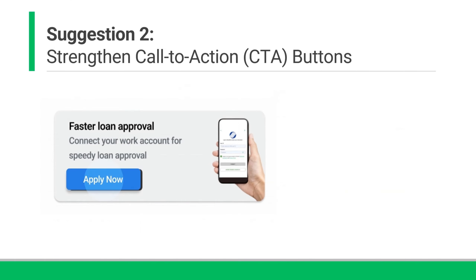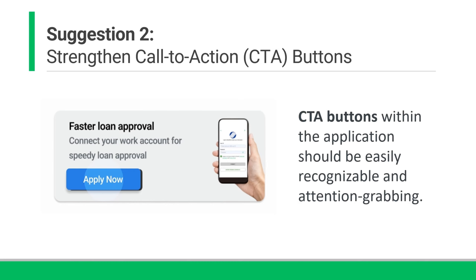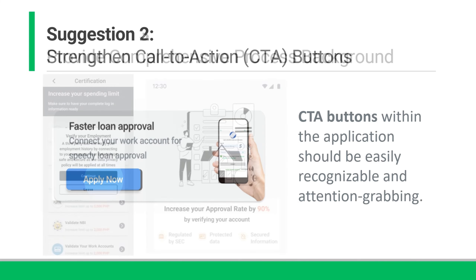Following this, CTA buttons within the application should be easily recognizable and attention-grabbing. By using contrasting colors to make them stand out and employing clear, action-oriented text, users are encouraged to take specific actions. This can increase user interaction with the pages and prompt them to engage more actively with the application.